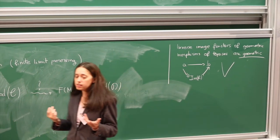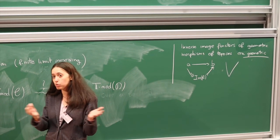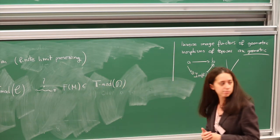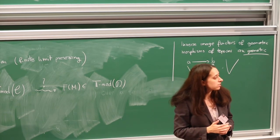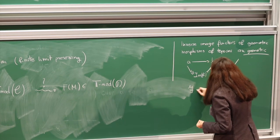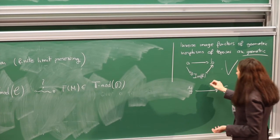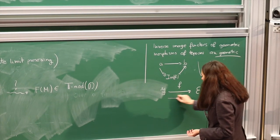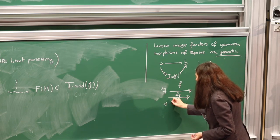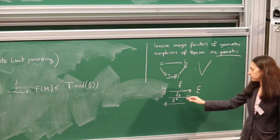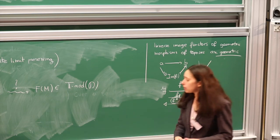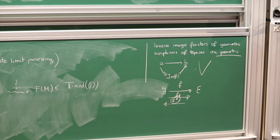A geometric morphism of toposes is written in the direction of the direct image. The direct image, which is the right adjoint, goes in one direction, and the inverse image, which is the left adjoint, goes in the other direction. This inverse image functor is the one we use to operate on models. So in the simplest case of algebraic theories, you need finite products and Cartesian functors, because you need the functor to preserve monomorphisms as well — so you just need finite limit preserving functors.